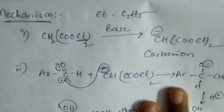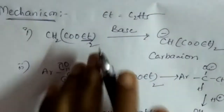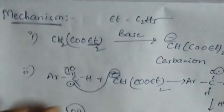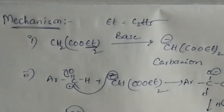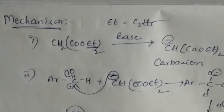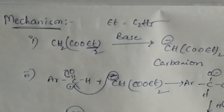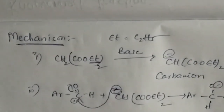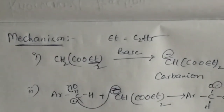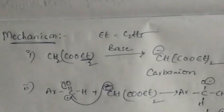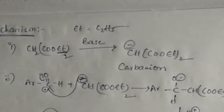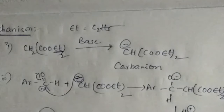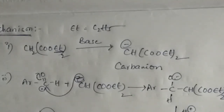So this is about the Knoevenagel reaction. First step, we take the active methylene group, and second, we take benzaldehyde and the active methylene group. The final product is cinnamic acid. Mainly we can observe that there is no alpha hydrogen.